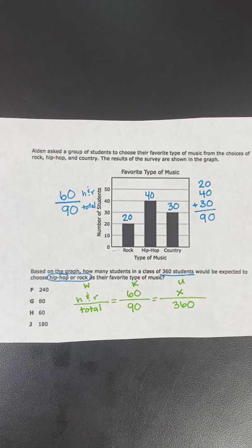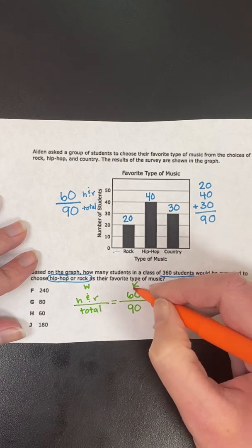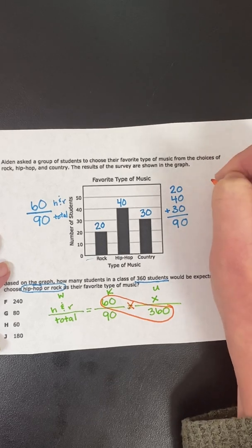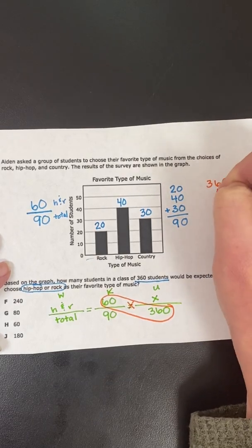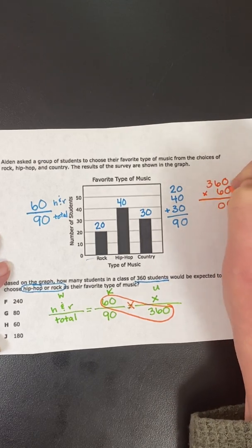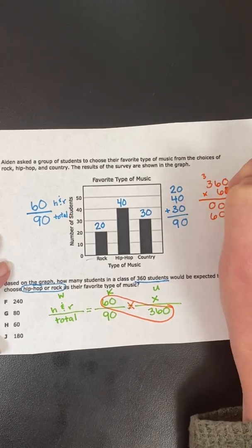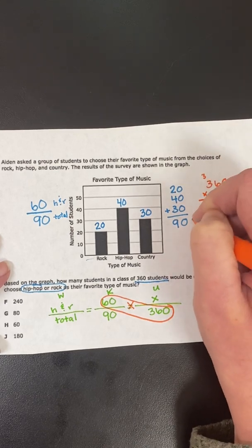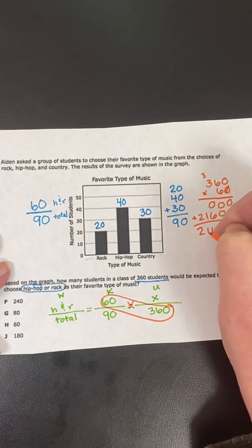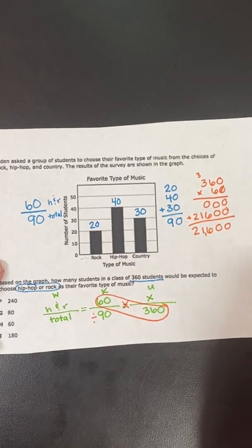So now that we have our proportion, we can solve it. And we know how to solve proportions. The first step we do is we take the numbers across from each other and we multiply. So I need to do 360 times 60. So 360 times 60. And I'm going to multiply through this. Zero. That would be zero and zero. Drop your zero. That would be zero, 36, 18, 19, 20, 21.